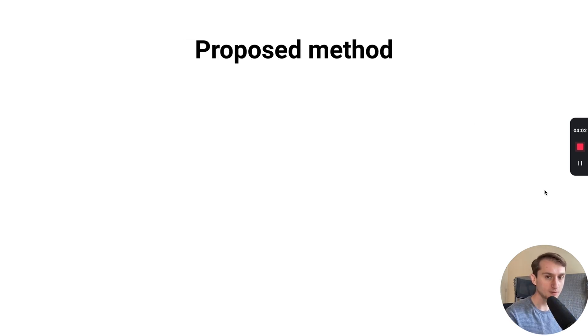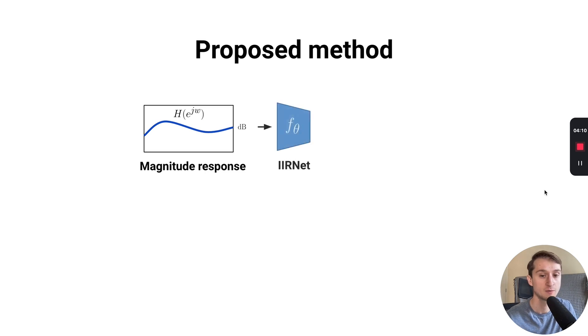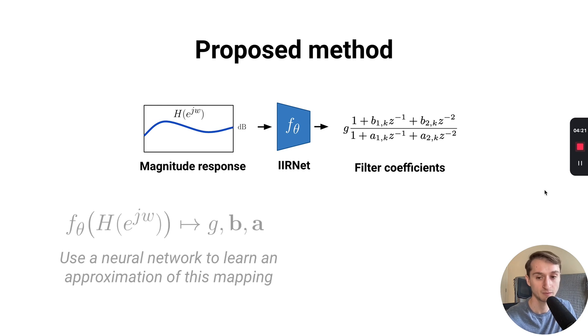So far, there's not been work on arbitrary filter design in the context of deep learning, which is what we aim to look at here. Our proposed method looks something like this. We start with a magnitude response that we want for our filter to achieve. We pass that as input to our neural network, which we call IIRNet, which then will estimate a set of filter coefficients that hopefully achieves that same magnitude response.